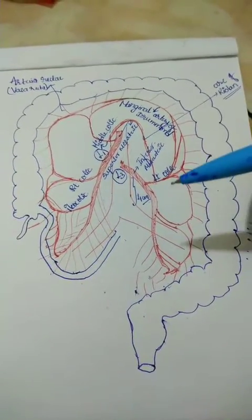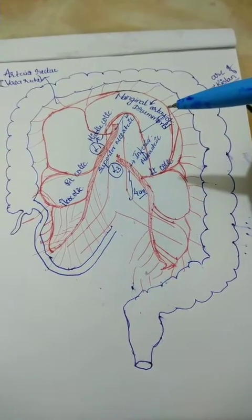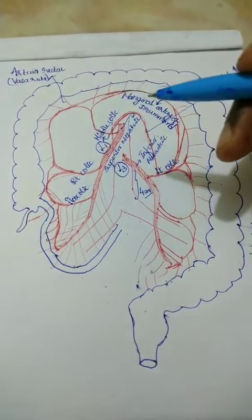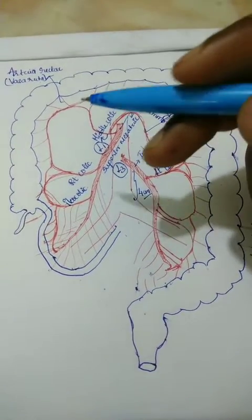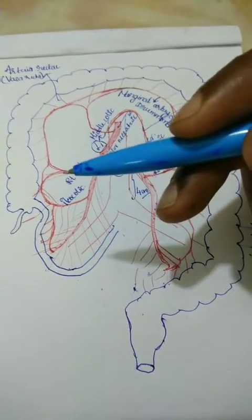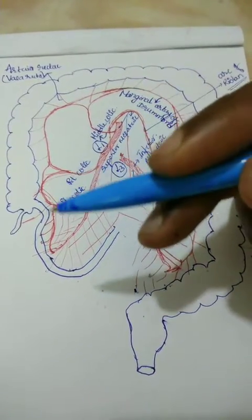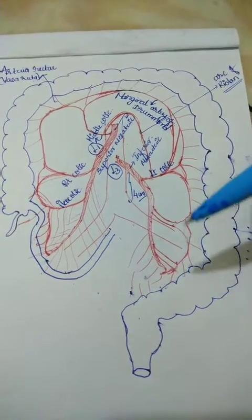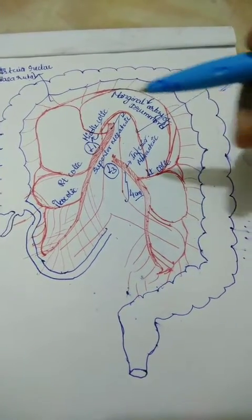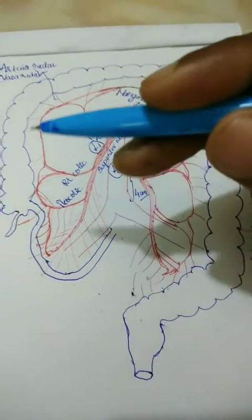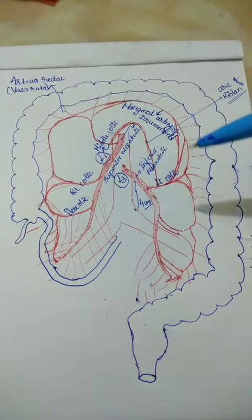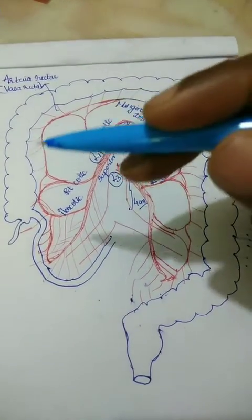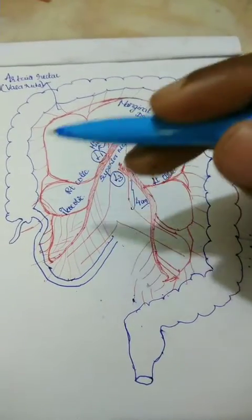The ascending branch of the left colic, the left and right branches of the middle colic, the ascending and descending branches of the right colic, and the ileocolic and sigmoid branches all together form a continuous arterial channel near the colon, which is called the marginal artery.